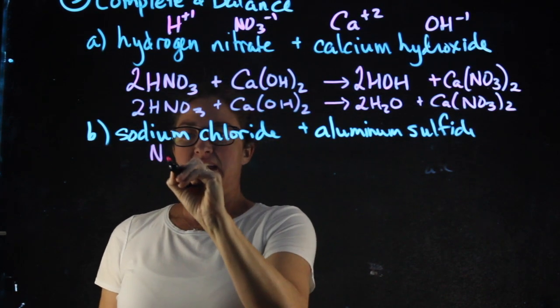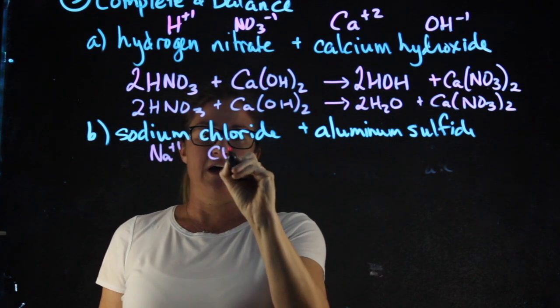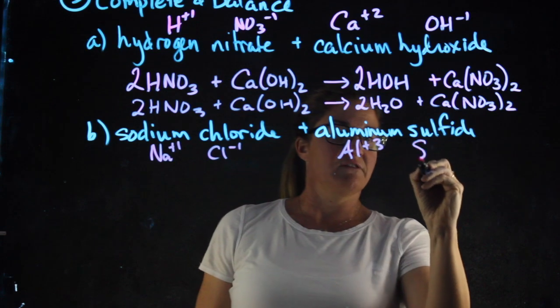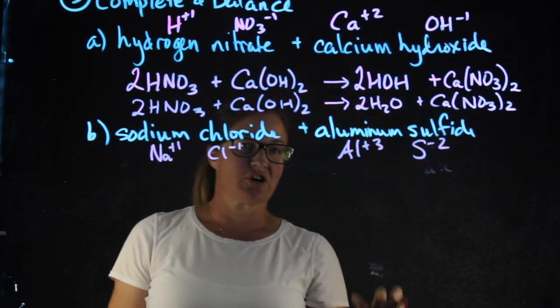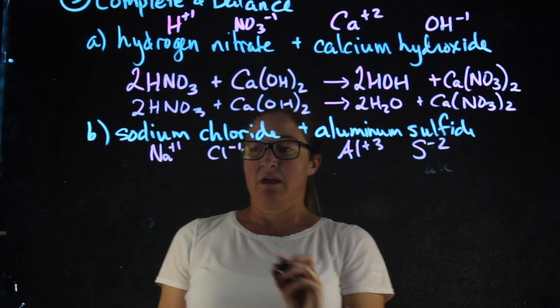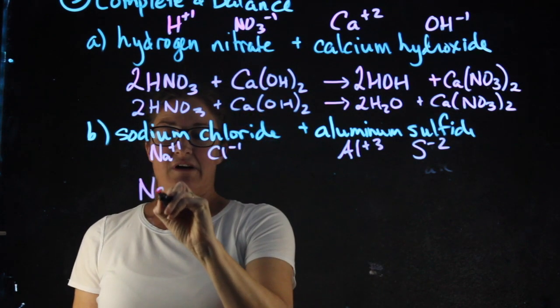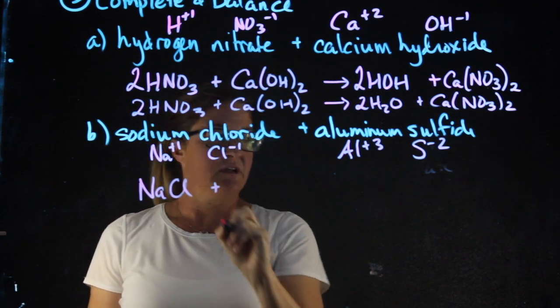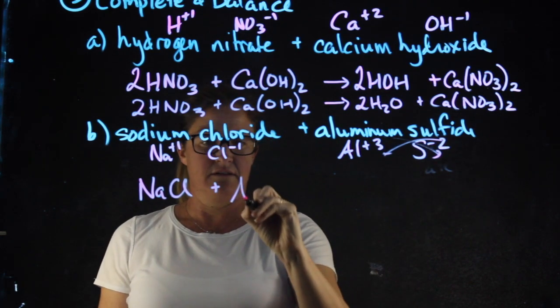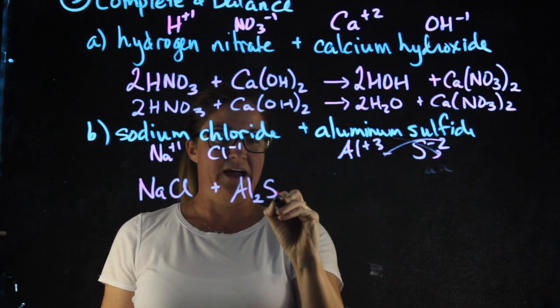Second reaction, I'm going to be combining sodium chloride with aluminum sulfide. Make sure to be careful about sulfide versus sulfate. For my reactants, sodium chloride is NaCl. Aluminum sulfide, I'll need to crisscross these, giving me Al2S3.